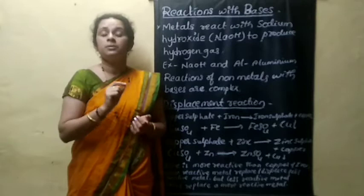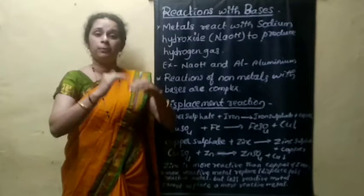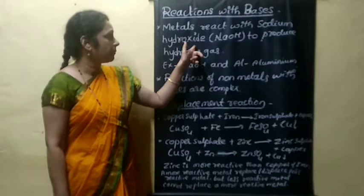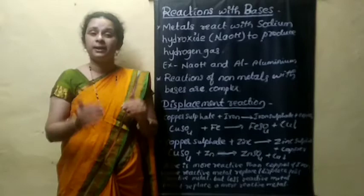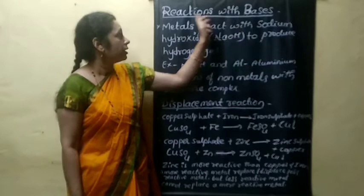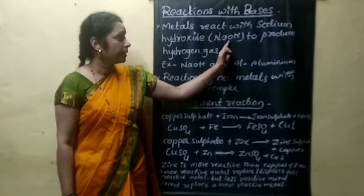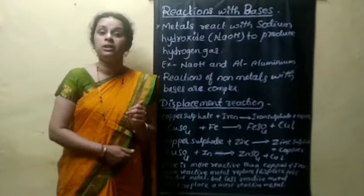Hydrogen gas can be tested using a burning splinter brought near the mouth of the test tube — it will produce a pop sound again, indicating hydrogen gas is liberated. Here, metals react with sodium hydroxide (a base) to produce hydrogen gas. That is what happens when metals react with bases.